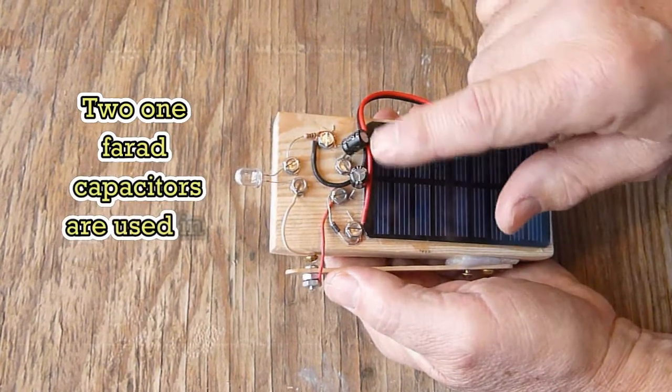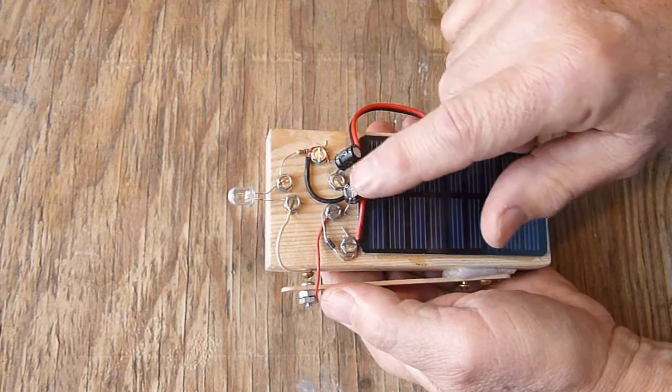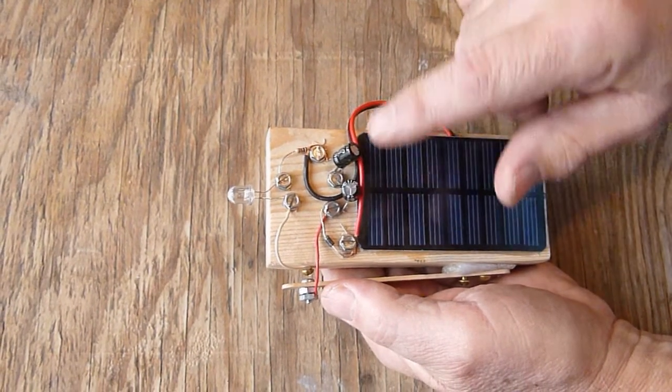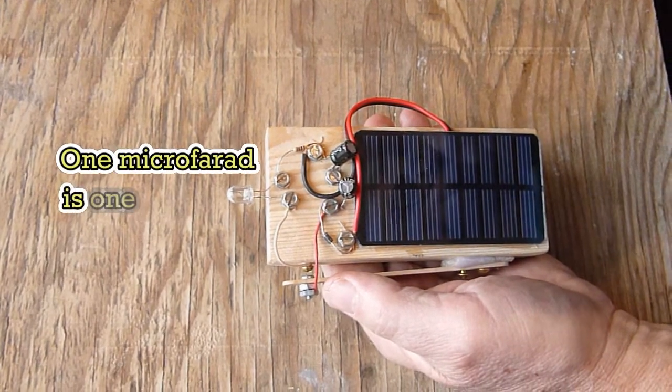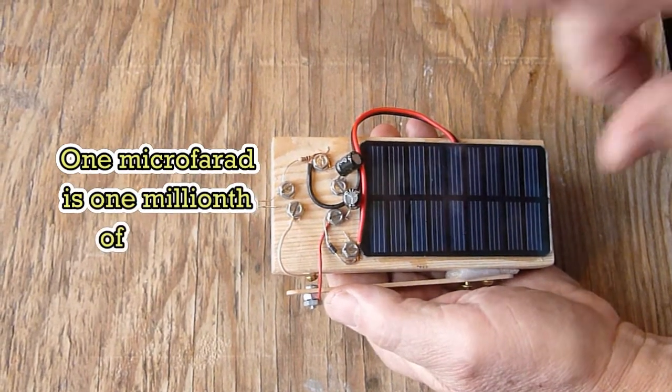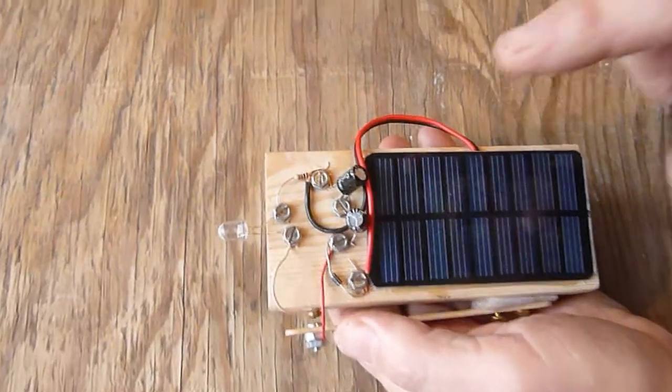These are one-farad capacitors, which are huge for capacitors, since capacitors are normally rated in microfarads, and one microfarad is one millionth of a farad. A farad capacitor can store a million times as much energy per volt as a microfarad capacitor.